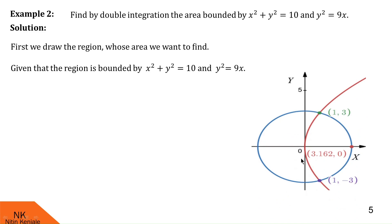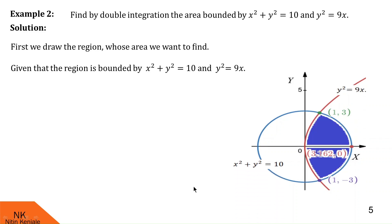This circle is centered at the origin with radius √10, and this parabola passes through the origin along the x-axis opening to the right. Both curves intersect at the points (1, 3) and (1, −3). To find these intersection points, substitute y² = 9x into the circle equation and solve for x — you get x = 1, and substituting back gives y = 3 and y = −3. So the bounded region is shown here in blue.